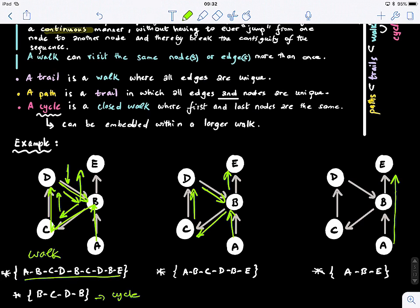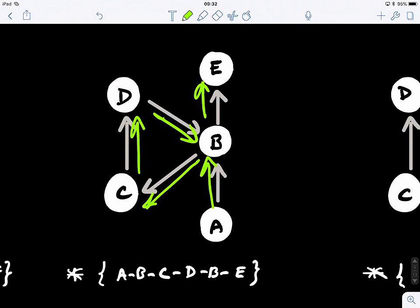Now for the second one, what is the second one? This one, it is a trail. So a trail, we can visit edges only once but we are allowed to visit nodes twice, and here you guys can see that we visited node b twice, right here and right there.